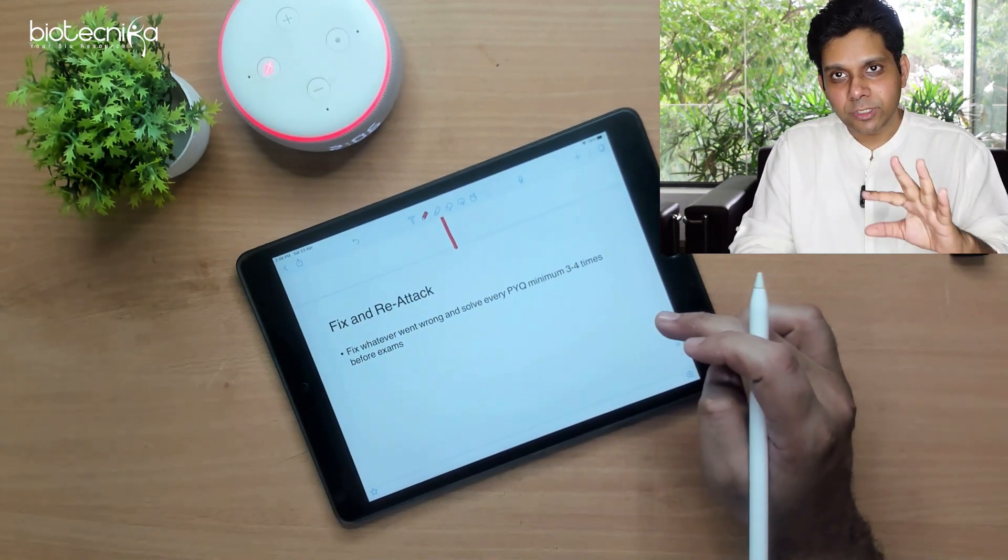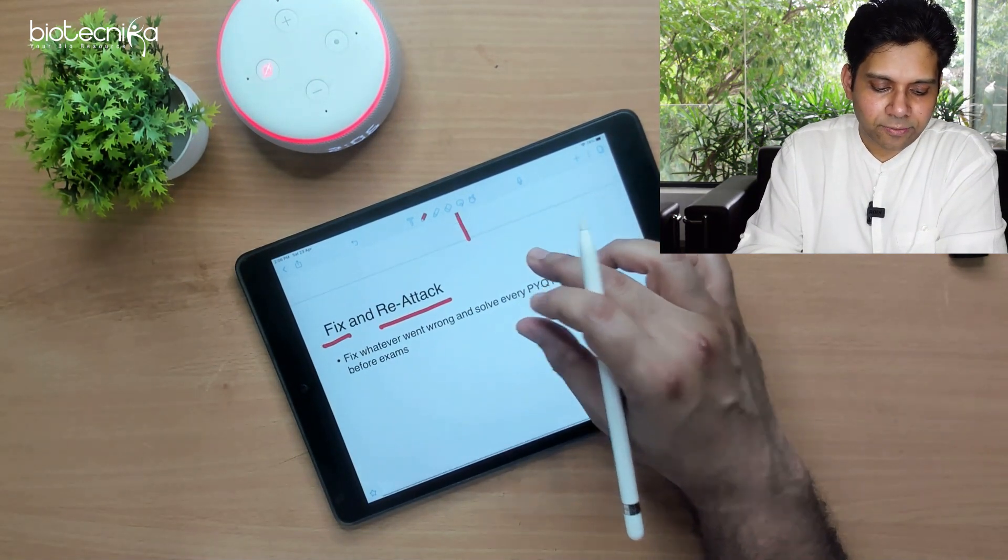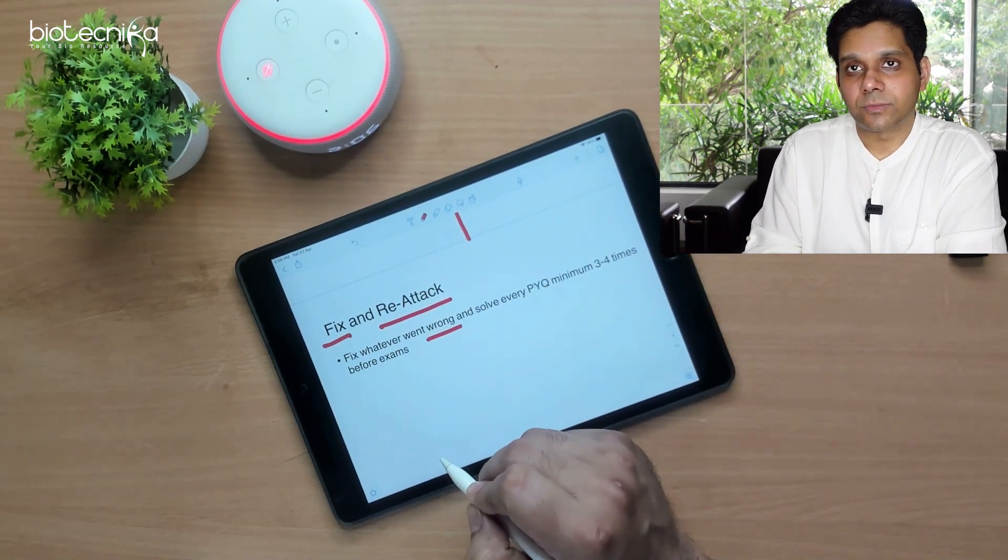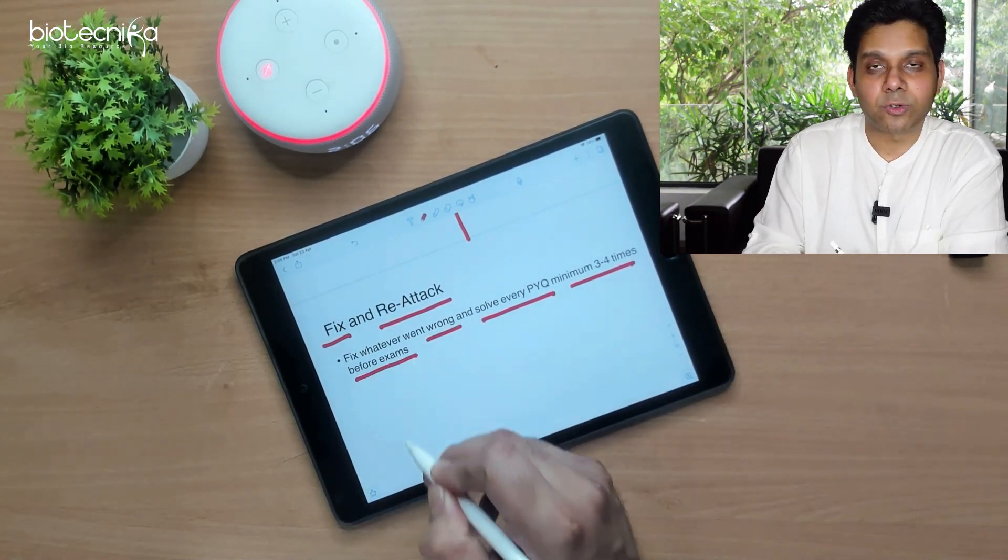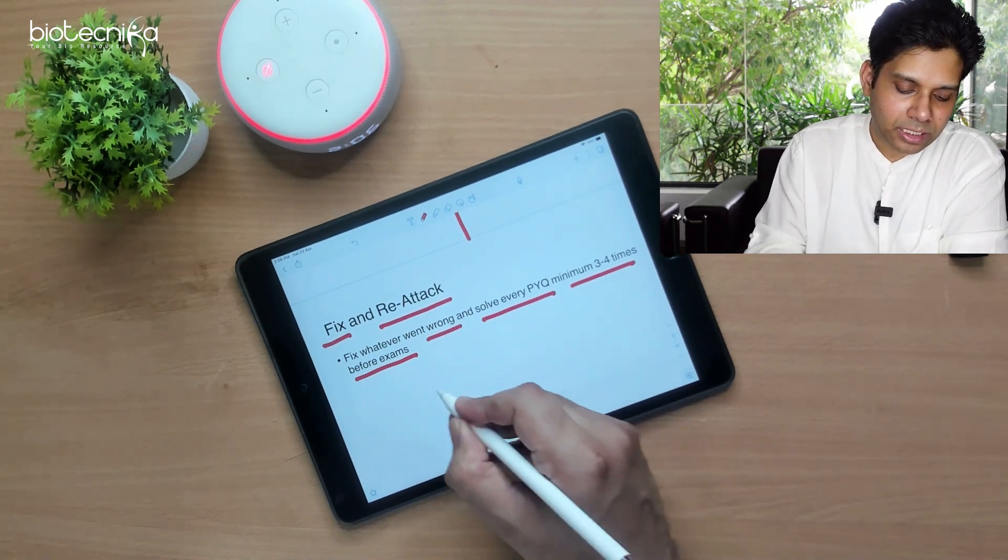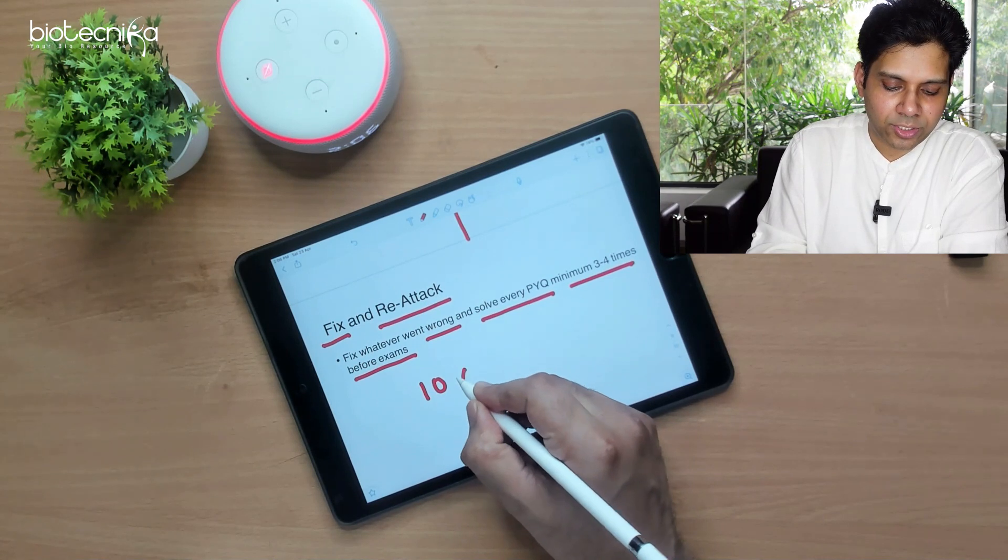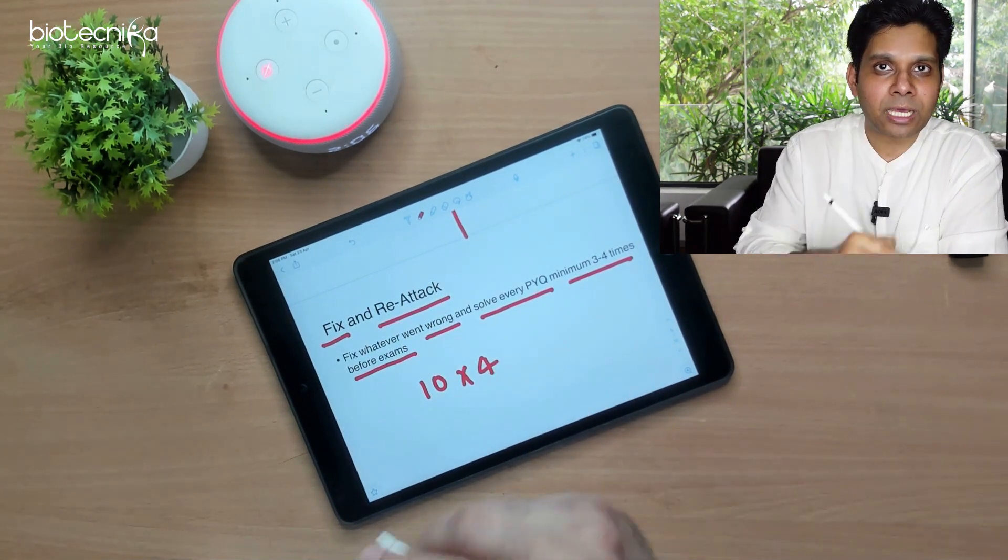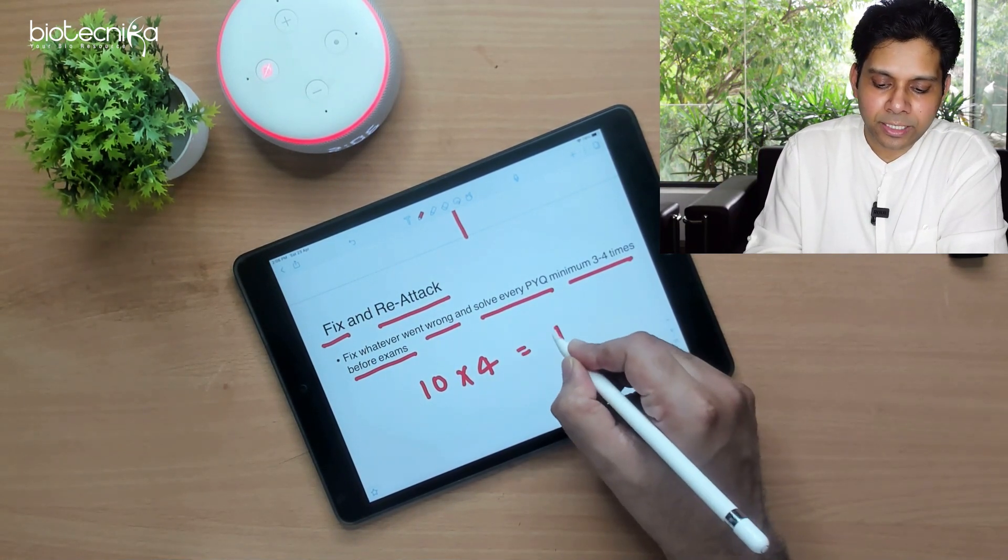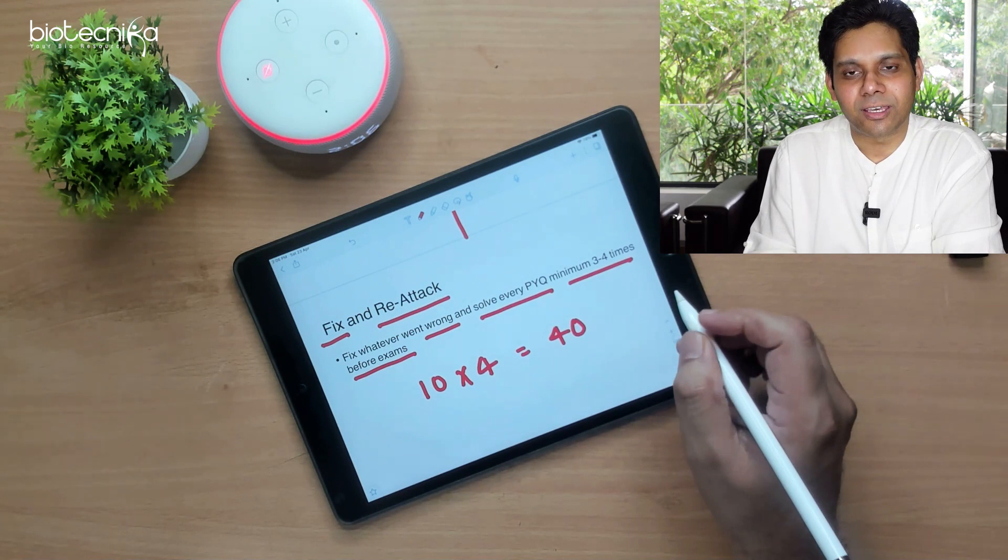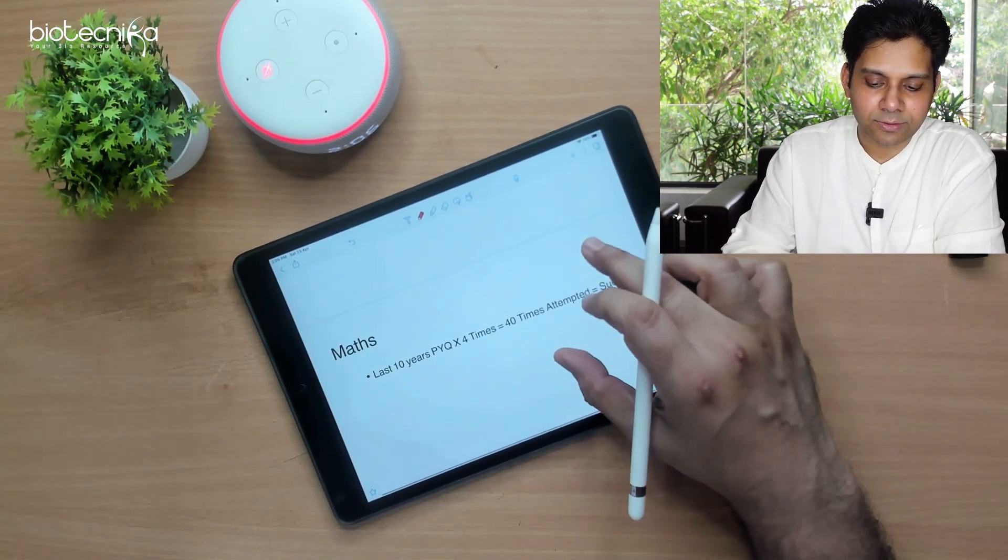Once you have done the analysis, then fix it and re-attack. How do you fix it? Fix whatever went wrong, revise and learn again. Solve every PYQ minimum 3 to 4 times before exam. That means if you have 10 years of previous question papers, you have to solve every question paper for minimum 4 times in a duration of 6 months. That means you have given 40 CSIR exam in 6 months. If you follow this, then only your chances of success is higher.